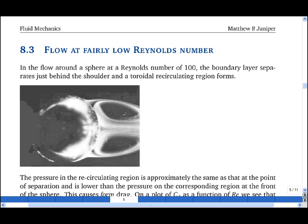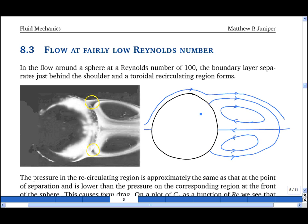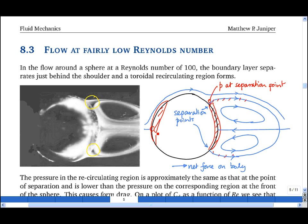What I want to do now is consider flows at a slightly higher Reynolds number than creeping flow. I shall call this fairly low Reynolds number, by which I mean the flow around the sphere at a Reynolds number of around 100. At this Reynolds number, the boundary layers separate. On the picture you can see flow separation here and here, and on my diagram they're shown here. Now the pressure along the back of this object is roughly the same as the pressure at the separation point, and this is lower than the corresponding pressure at the front of the sphere. And this gives a net force on the body from left to right in the direction of the flow. This is known as form drag.